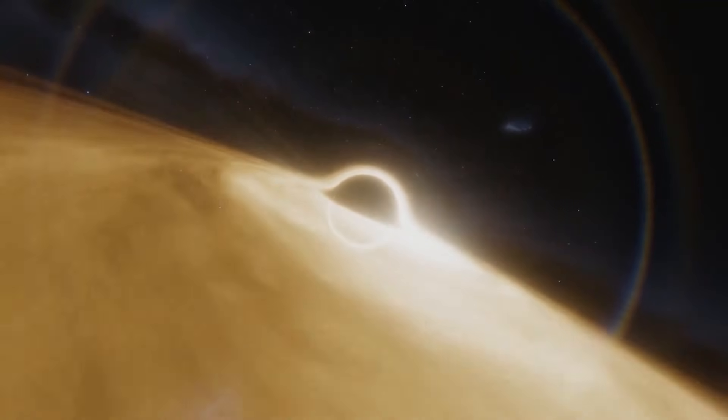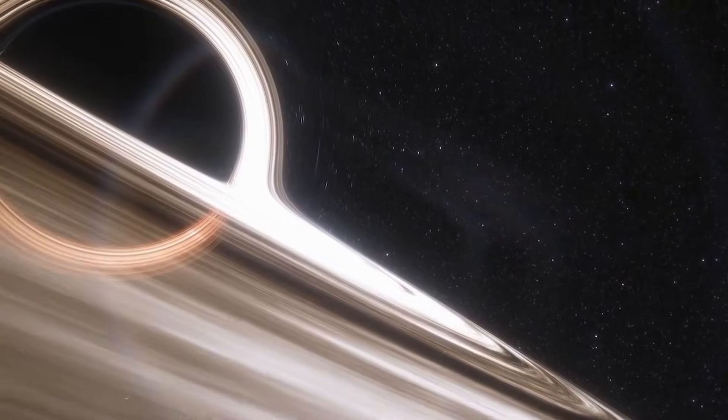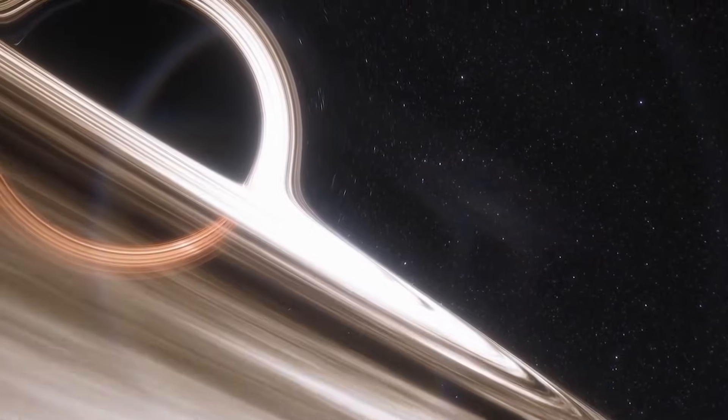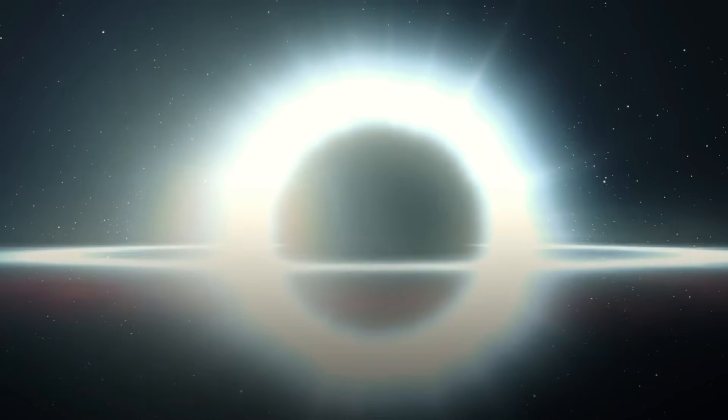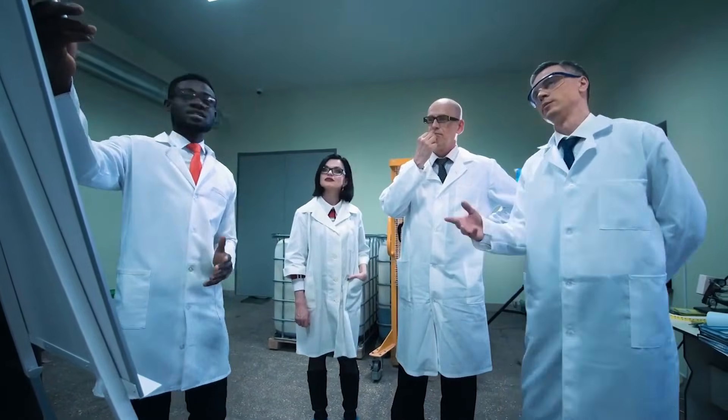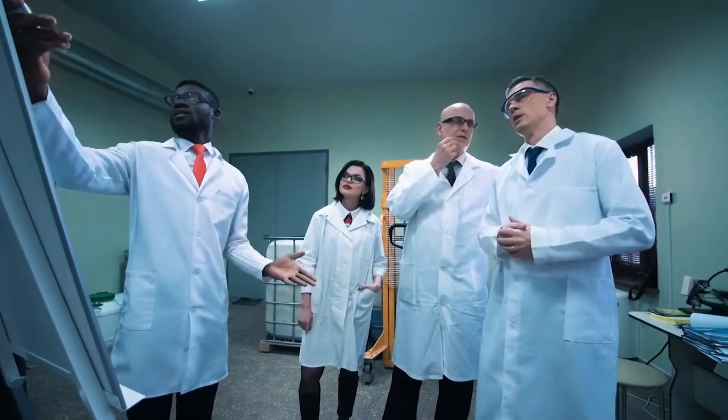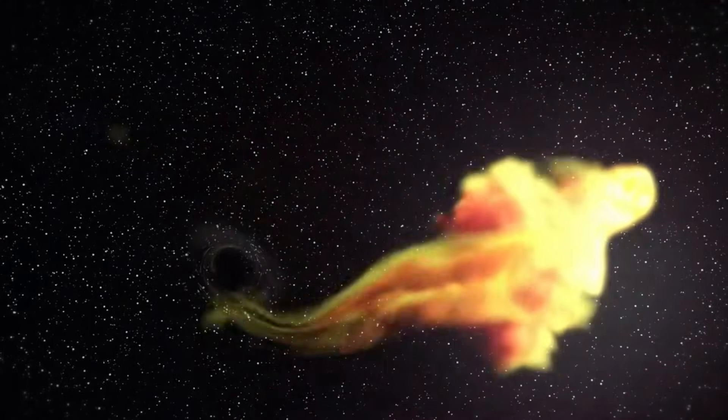As the star drifted closer, the gravity of the black hole pulled harder on one side than the other. The star stretched into a spaghetti-like strand. Astronomers literally call this spaghettification. Half of the star was swallowed.